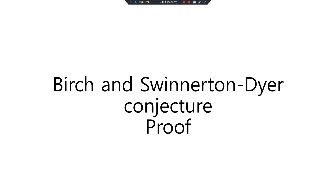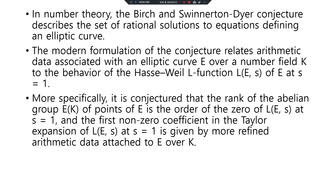Birch and Swinnerton-Dyer Conjecture Proof. Number theory — the Birch and Swinnerton-Dyer Conjecture describes the set of rational solutions to equations defining an elliptic curve. The modern formulation of the conjecture relates arithmetic data associated with an elliptic curve E over a number field K to the behavior of the Hasse-Weil L-function L(E) at s equals 1.